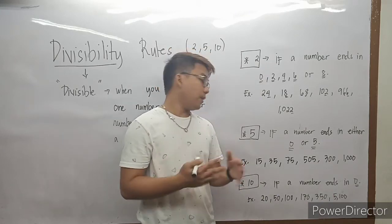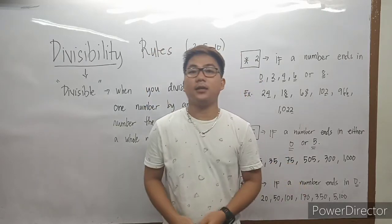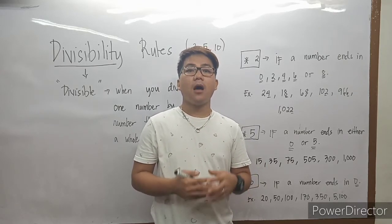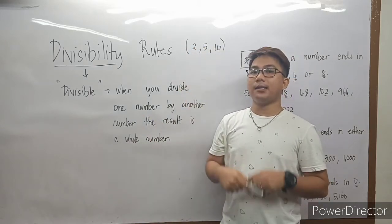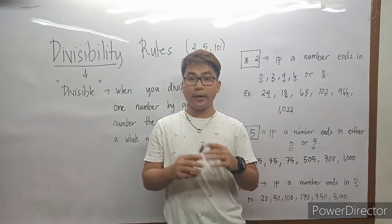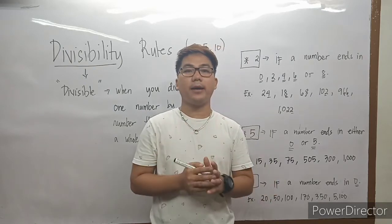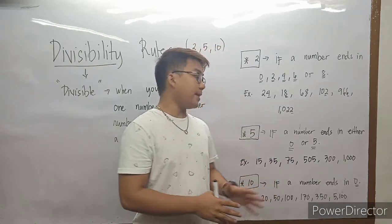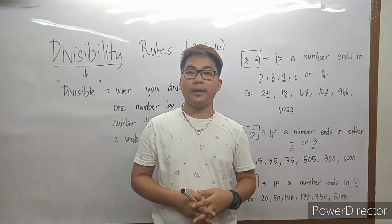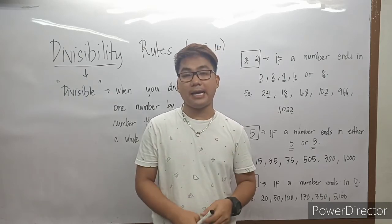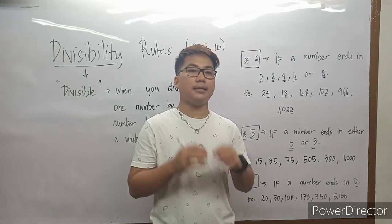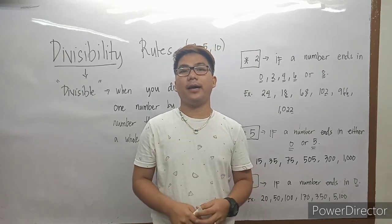So, pagkakitaan natin yung about divisibility rules of 2, 5, and 10. Kapag 2: if the number ends in even numbers — 0, 2, 4, 6, or 8 — automatic yung number na yun ay divisible by 2. Kapag 5 naman: if a number ends in 0 or 5, masasabi nating divisible by 5. Kapag nagtatapos sa 0 or 5, tandaan natin yan. And kapag 10 naman: if the last digit ends in 0, automatic yung number na yun ay divisible by 10.